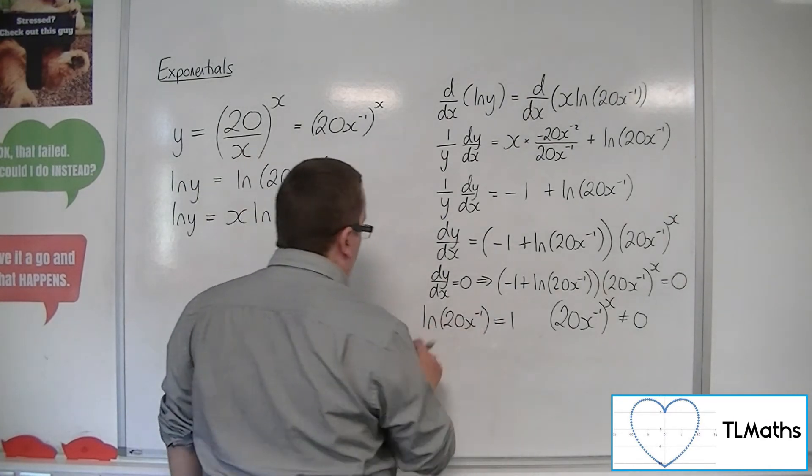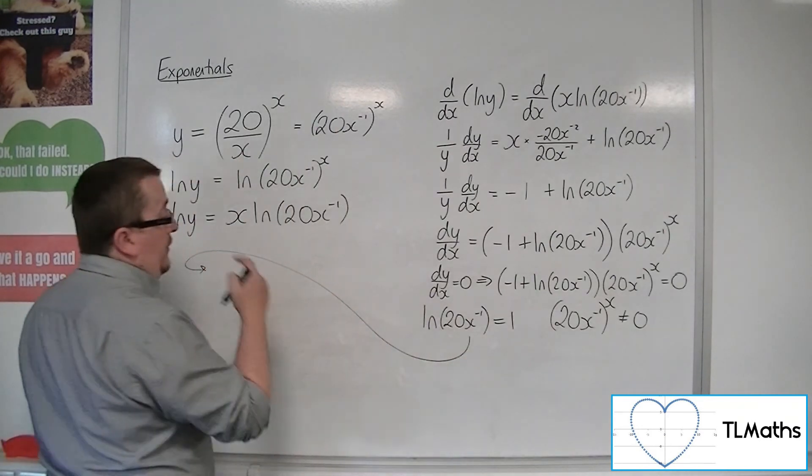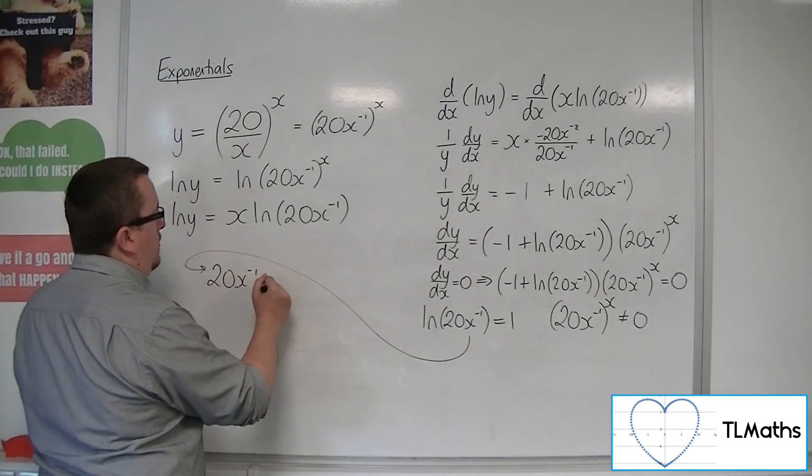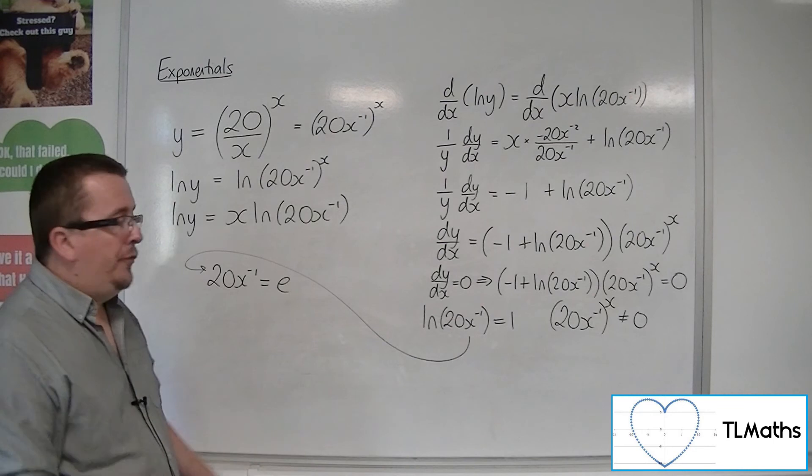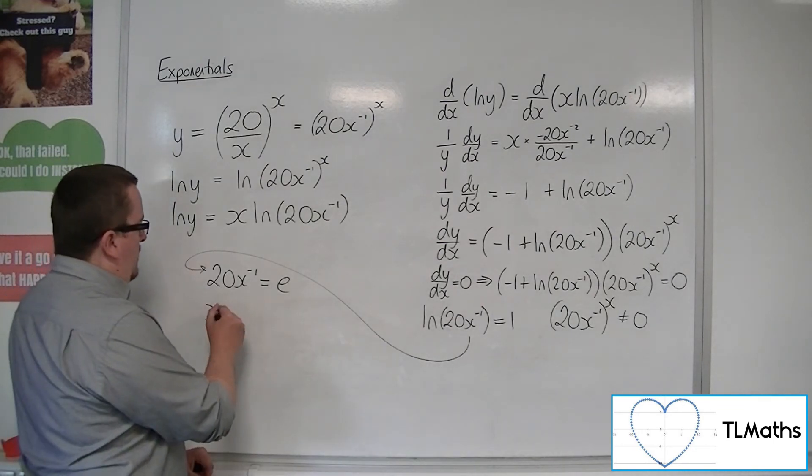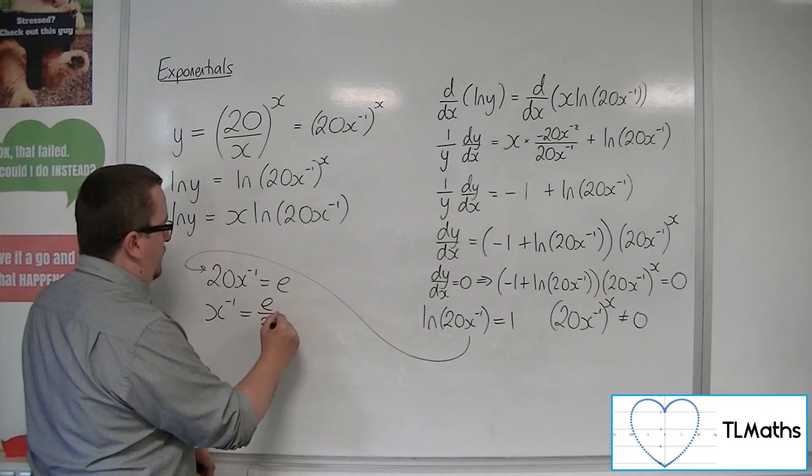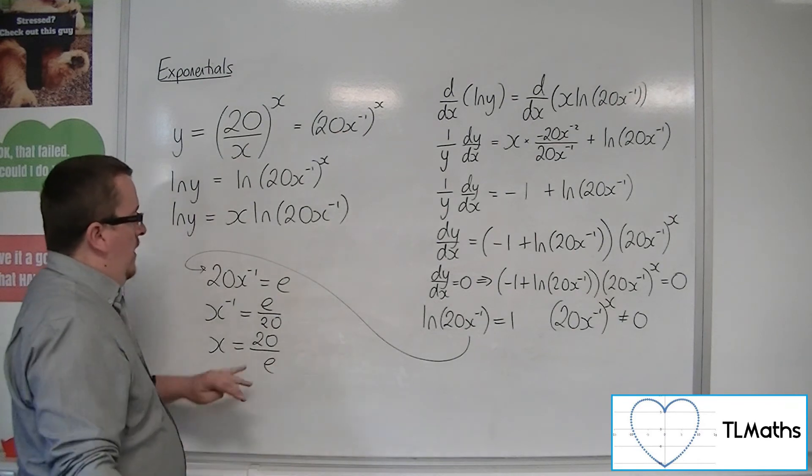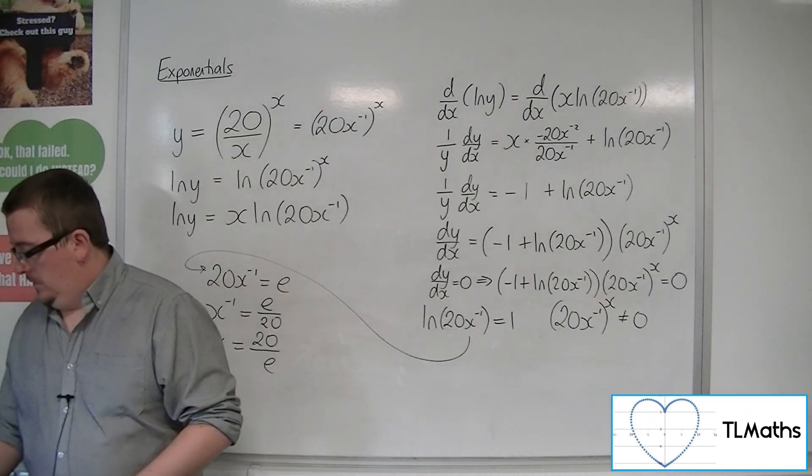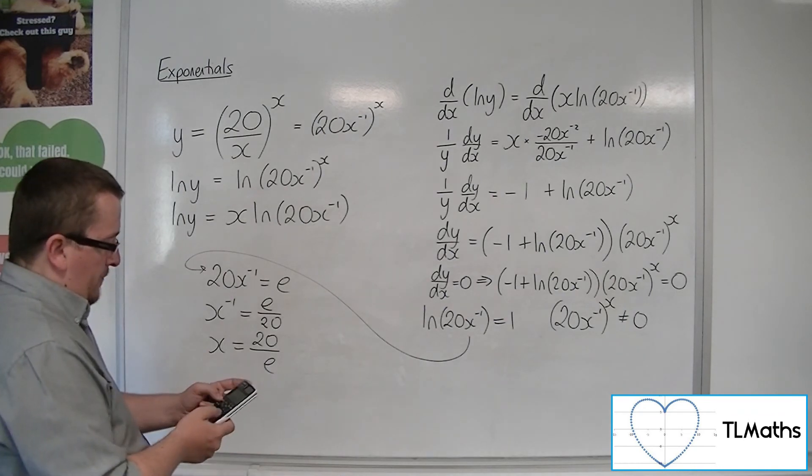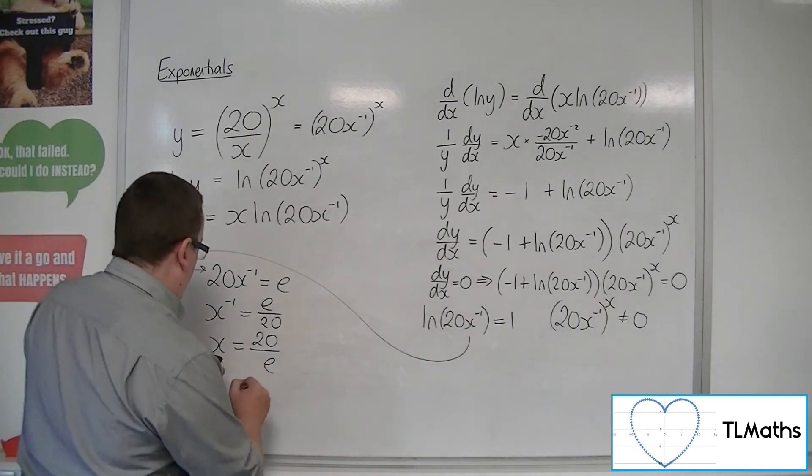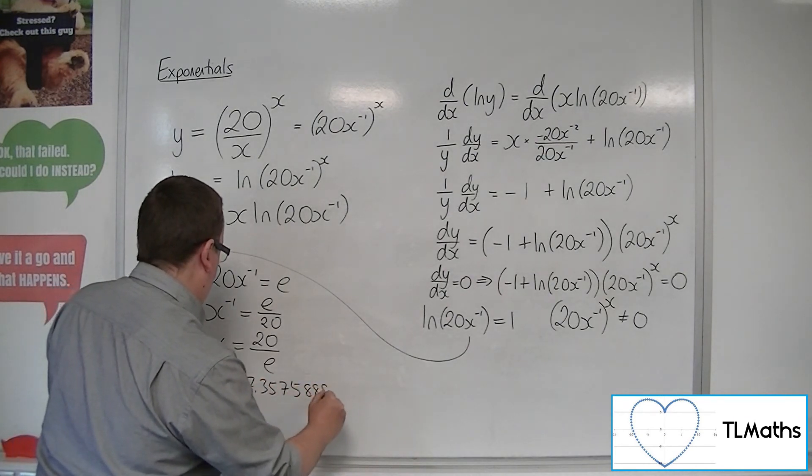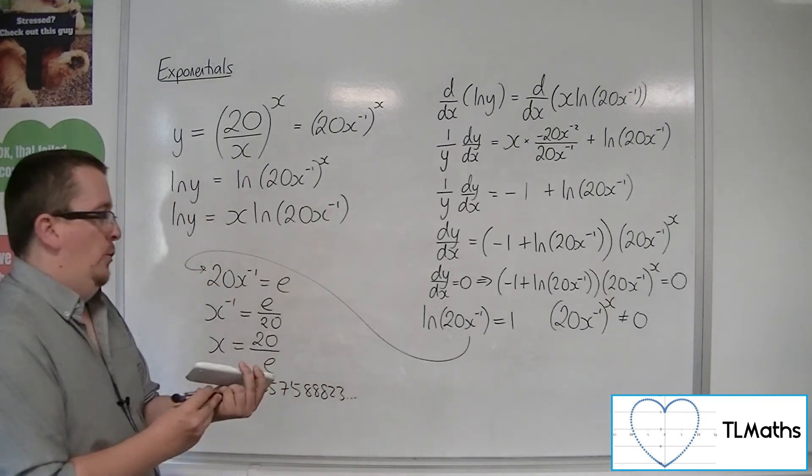Now we need to solve this equation. So what we can do is we can then say, well, that means that 20x to the minus 1 must be e by e-ing both sides. So x to the minus 1 must be e over 20. So x is actually 20 over e. This is the value that you would have been homing in on. So this is 7.357588823. Full calculator display.